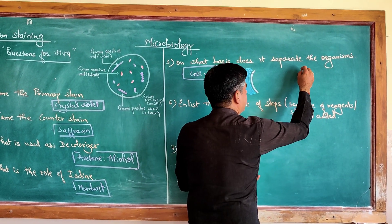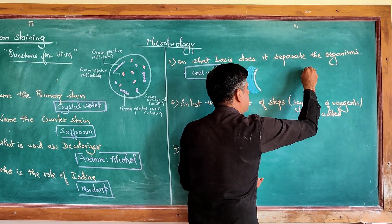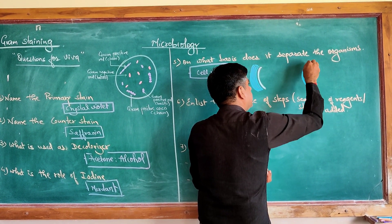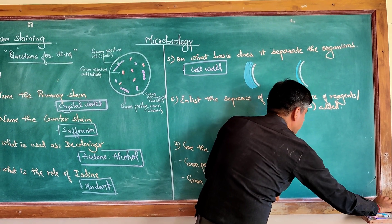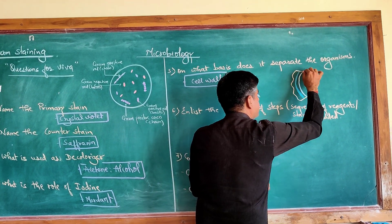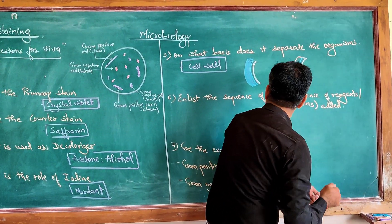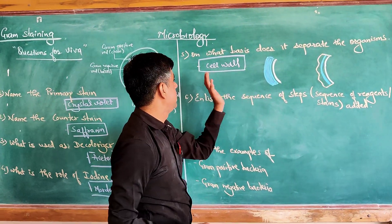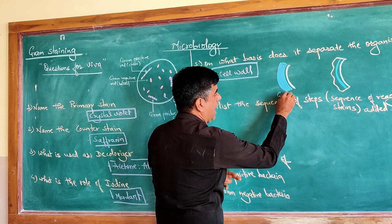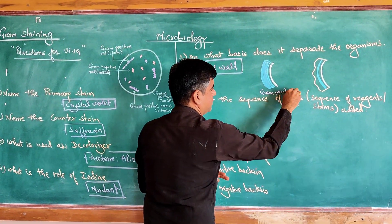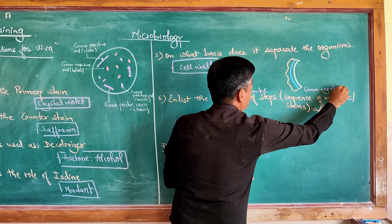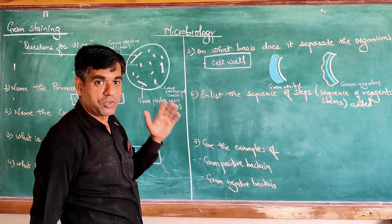For gram negative bacteria, it is more complicated. It has a cell membrane, then a thinner layer of peptidoglycan, and then an outer membrane — an extra structure. These differences in cell wall between gram positive and gram negative organisms are the basis of gram staining.